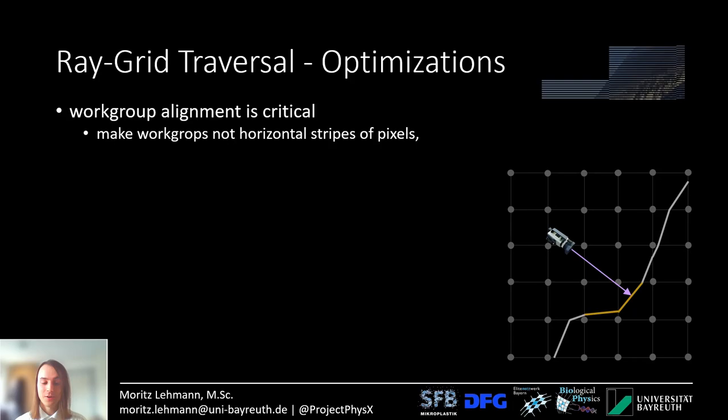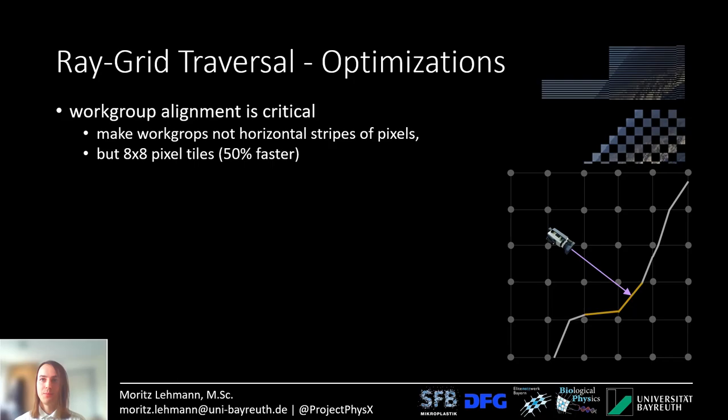However, performance is not optimal. It is much better to align the workgroups as tiles of 8x8 pixels. You lose coalesced memory access on the bitmap, but what you gain is that all of the rays are combined into one bundle with a small angle. So it is more likely that all rays will traverse the same grid cells and hit the same triangle — you get an effect called memory broadcasting. This is a type of coalescence and gives you overall about 50% performance increase just from aligning the workgroups.